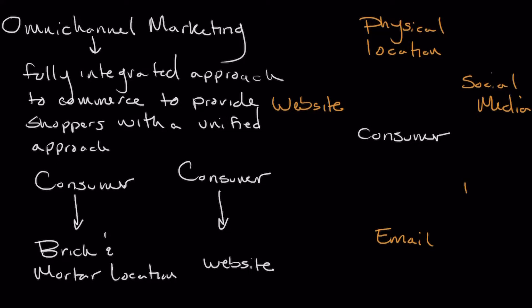We can also utilize what we call PPC ads — commonly referred to as pay-per-click — which are advertisements we can show in Google search results, on Facebook, Instagram, or other social media platforms. We pay based upon the number of people that click or impressions, which represents the number of people that actually see them. And let's throw in direct mail as well — that's a fairly expensive form of marketing, but it's another channel within our omnichannel strategy aimed at drumming up more business.